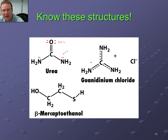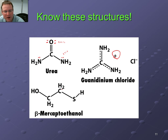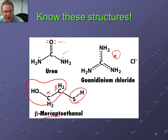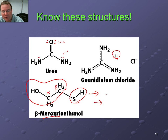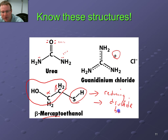Urea is a structure you should know, and guanidinium chloride is a structure you should know. Guanidinium is the same group that's part of the amino acid arginine — the guanidinyl group is a positively charged side chain. The other structure worth knowing is beta-mercaptoethanol: a substituted ethanol at the beta-carbon with a thiol group added (thiols are sometimes called mercaptans). Beta-mercaptoethanol, like DTT, is very good at reducing disulfide bonds — converting disulfides to free thiols.